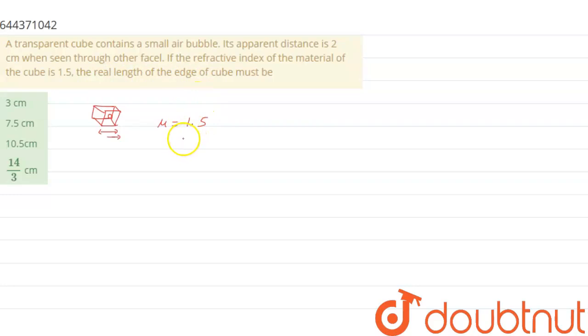So we know that x upon mu, that is, real distance divided by refractive index, equals to 2.